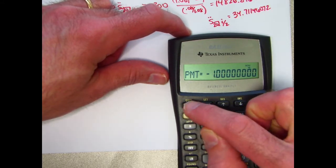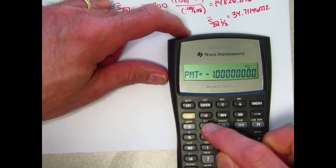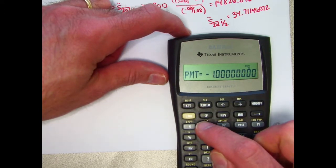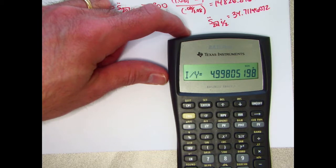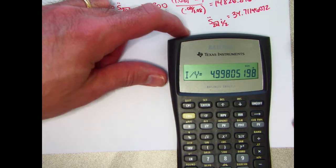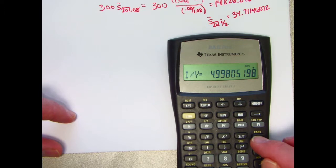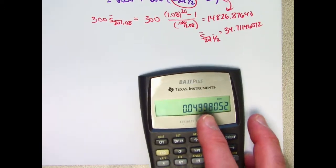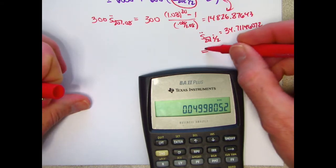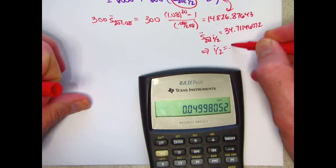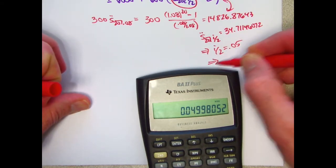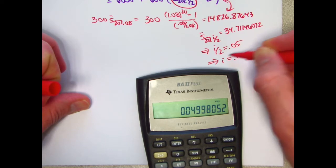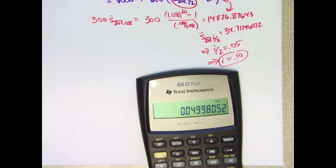Press CPT for compute. And then I slash Y for interest per year. It's computing. There we go, about 5. And that is as a percent. So divided by 100, I over 2 is about 0.05. And therefore the answer to the question is that I is about 0.10. And that does solve the problem.